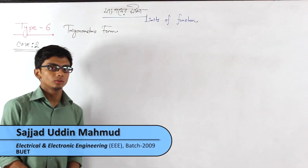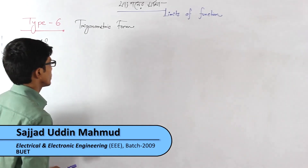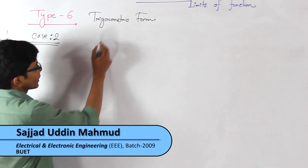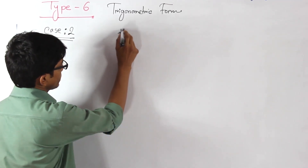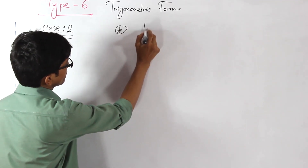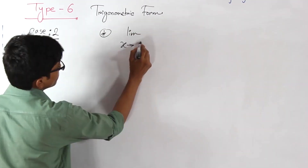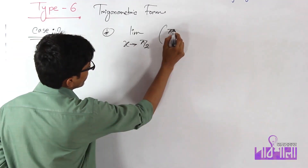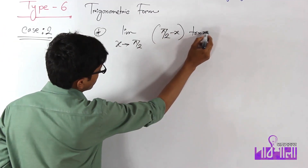In Case 2 trigonometry format, you can see the limit of x tends to π/2 of (π/2 minus x) times tan x.